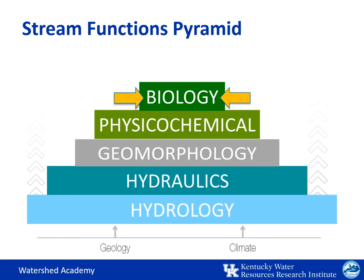Biology is located at the top of the pyramid because these functions are dependent upon all of the underlying functions. Biological functions include biodiversity — the variety of organisms — as well as the life histories of aquatic and riparian organisms. This includes types of organisms that feed in an area, reproduce in an area, or spend some part of their life cycle in the water and surrounding habitat. Biological functions can affect lower level functions; for example, a beaver can affect the geomorphology and hydraulics of the stream. However, the dominant cause and effect relationship is upward.